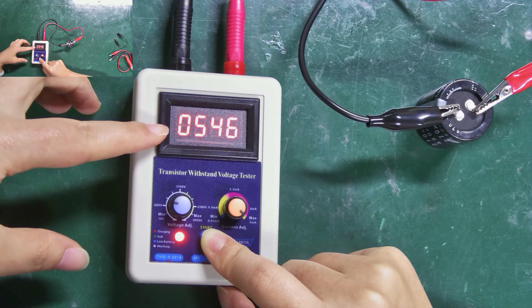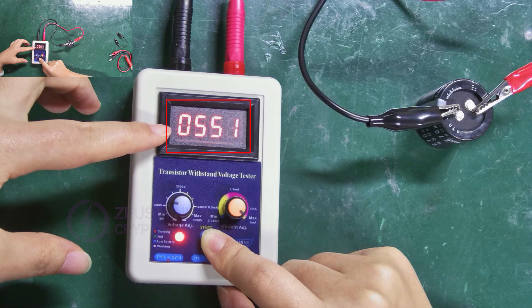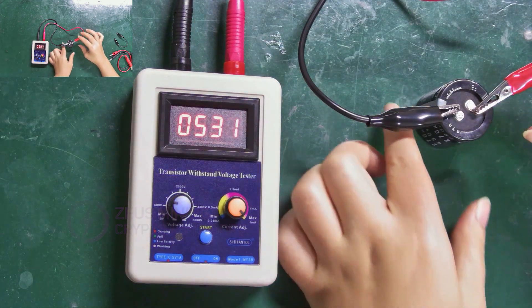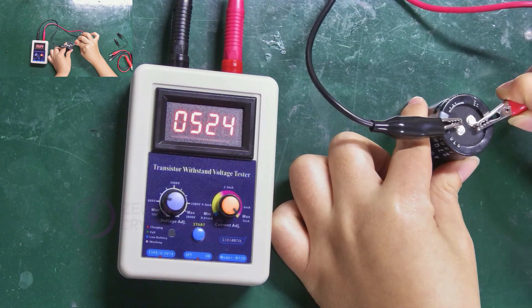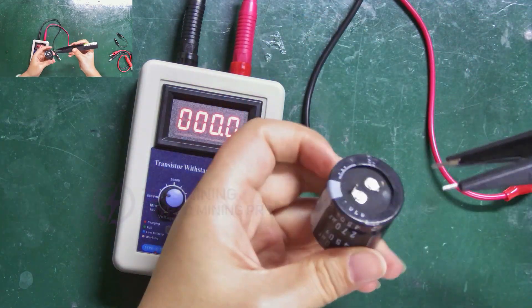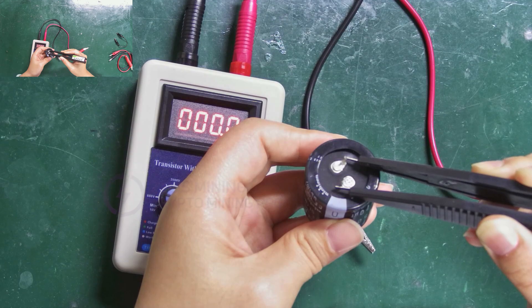Okay, this is its withstand voltage value, which is around 550 volts. When removing the clips, take off the positive one first, then the negative one. After that, discharge the capacitor.